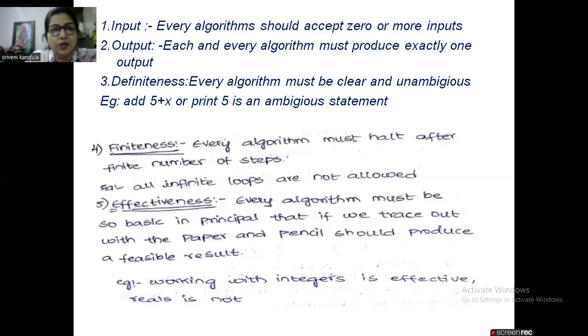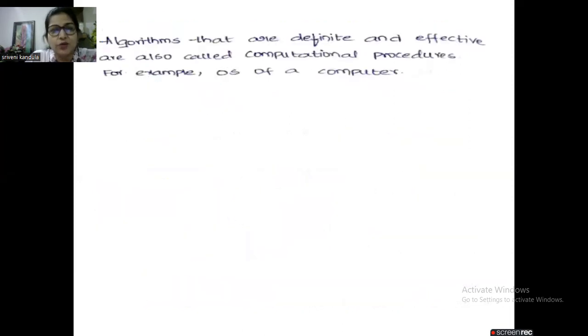So these are the five criteria of an algorithm to be satisfied. Up to here, you should write for any university exam. Those who are preparing for competitive exams, I will add one more point. Algorithms which are definite and effective are also called as computational procedures. The best example is the voice of your computer.